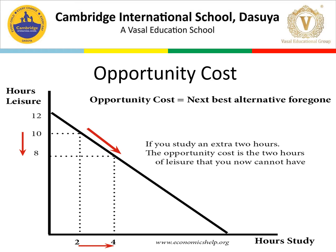We have a graph showing two concepts: leisure hours and hours of study. If we take two hours for study, we are utilizing those hours for learning instead of leisure. So at the opportunity of losing leisure time, we started learning. That cost — what we gave up — is the opportunity cost. Opportunity cost is the next best alternative foregone.